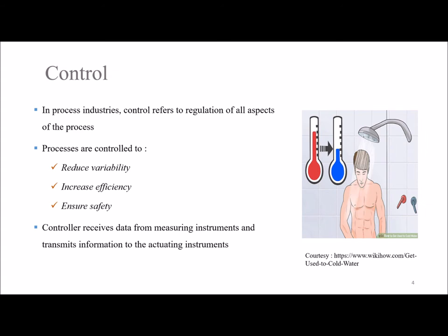Here, a human senses the temperature of water for feedback and responds accordingly. The whole process works in a closed loop fashion. What controllers do in industries is something similar. Control systems in process industries keep track of different parameters in a process like pressure, temperature, etc., making sure that they are at the desired levels.